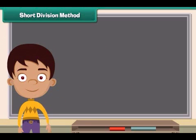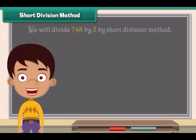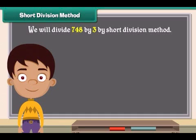Short division method. Now we will divide 748 by 3 by short division method. Divide the first number in the dividend.